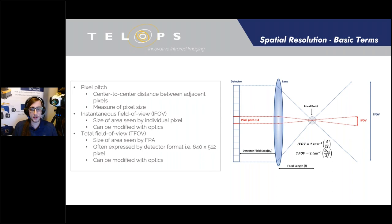Pixel pitch is the center-to-center distance between adjacent pixels and directly dictates the ability of the camera to resolve fine detail within the recorded image. Under the same conditions, a detector with small pixel pitch will be able to get more pixels on target, leading to images with superior quality and detail. Conversely, a detector with larger pixel pitch is able to collect more photons, which is ideal for high-speed measurements, low-signal environments, and situations where longer integration times are not possible. Instantaneous field of view, or IFOV, refers to the solid angle through which a single detector pixel is sensitive to electromagnetic radiation — envisioned as the size of the area each individual pixel sees.